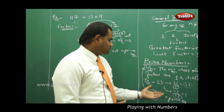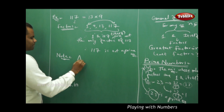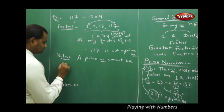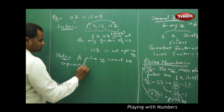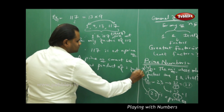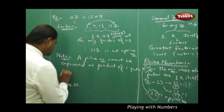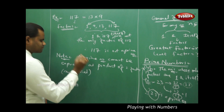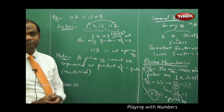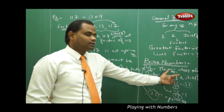This is how we define prime numbers with basic examples. A prime number cannot be expressed as a product of two non-trivial factors. When I take 1 and the number itself, those are trivial factors — a prime number cannot be expressed as a product of two non-trivial factors. That is how we define a prime number connected with the concept of factors.